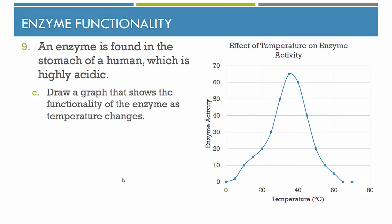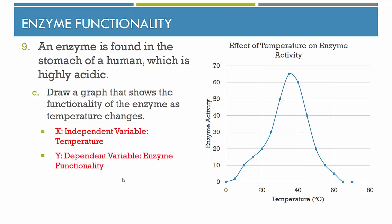Draw a graph showing the functionality of the enzyme as temperature changes. The independent variable — temperature — goes on the x-axis, and the dependent variable — enzyme functionality — goes on the y-axis. The graph shows that we peak with the most enzyme activity around the ideal temperature, right around body temperature. From this graph, the enzyme functions in the range of about 20 to 50 degrees, but functions best right around body temperature — around 37 degrees Celsius.